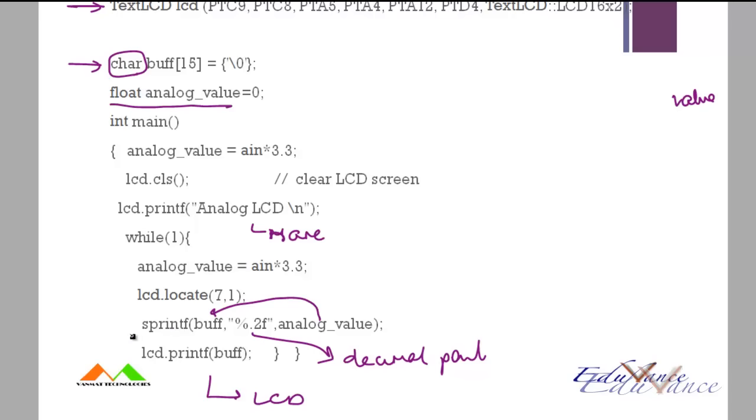First we use the AnalogIn, we call the variable ain and give it to PTC2 as I said. Your TextLCD remains the same from the previous lab. If you remember in the LCD lecture, I mentioned that if we would like to write a floating point value on the LCD, we use something called typecasting. We need to change the float value and write it into a character so that we can display it on the LCD. I declare this character buffer which is 16 characters, then I declare a variable float analog_value, then I start my main function. Can you guess what this line does? If you remember, ain will give me a range from 0 to 1. So if I need my actual voltage, I need to multiply by 3.3 to get my actual analog value, then I clear the LCD.